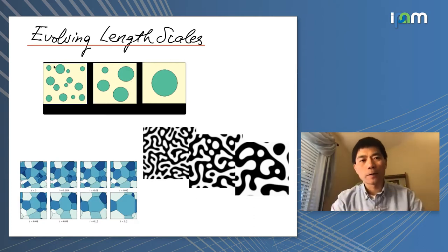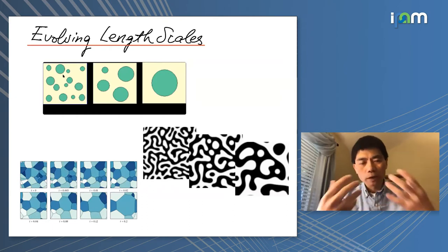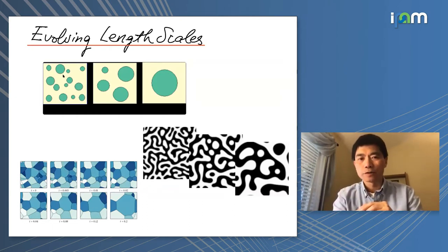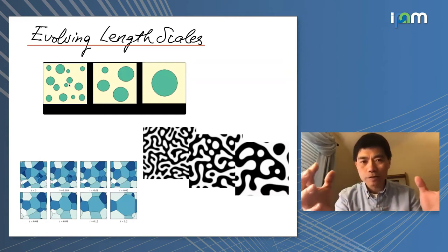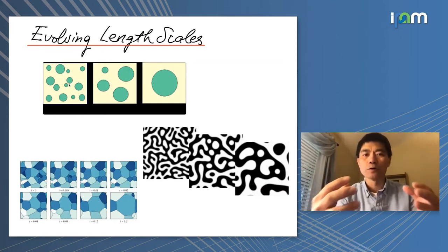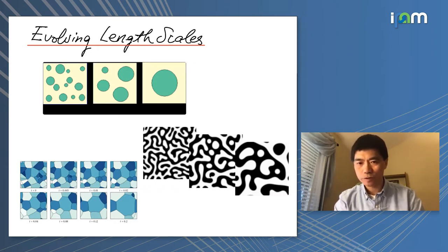Whenever you have a boundary, you have energy. If the system is energy-driven, it will try to reduce that energy. One way to reduce the energy is to reduce the boundary area or volume, depending on the dimension. So as time goes by, the length scale will try to increase, and the total surface energy per unit volume will try to decrease. Examples include bubbles interacting with a field, mixing of different fluids, and grain boundary or Voronoi cell evolutions.